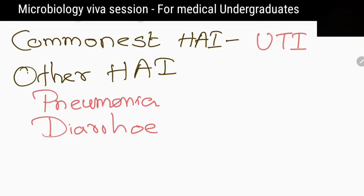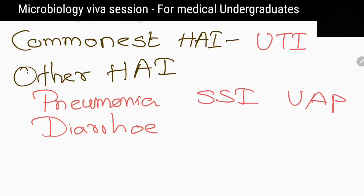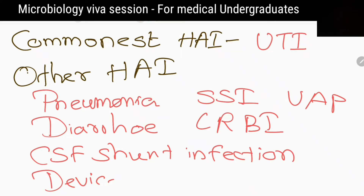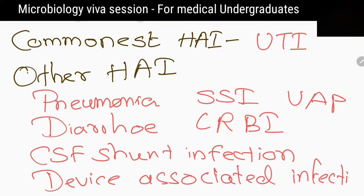What is the commonest hospital acquired infection you know? Urinary tract infection. Give me some other common examples for hospital acquired infections. Pneumonia, diarrhea, surgical site infections, device associated infections like catheter associated urinary tract infections, and ventilator associated pneumonia.